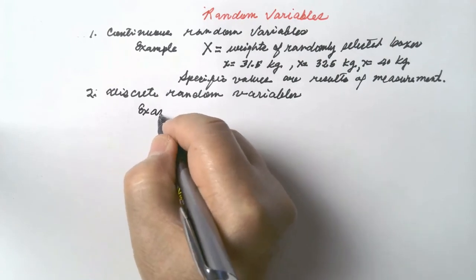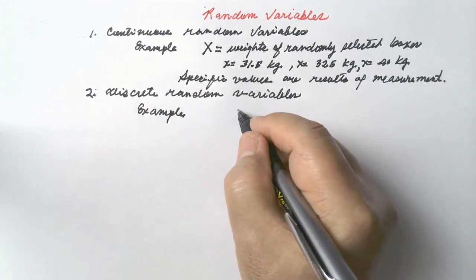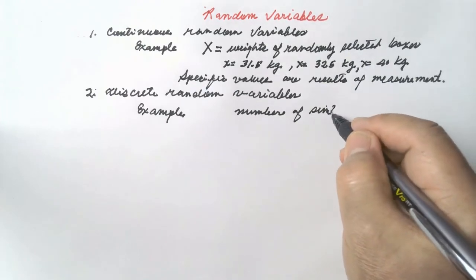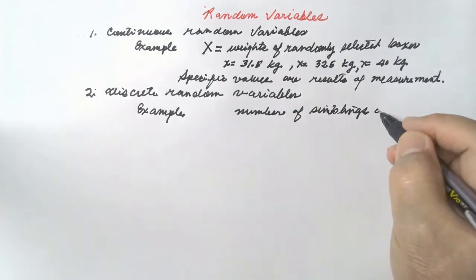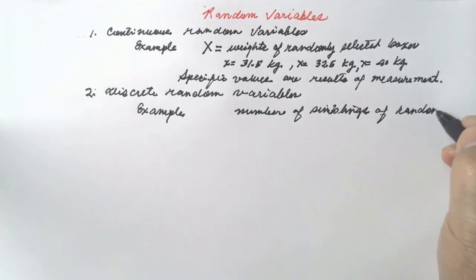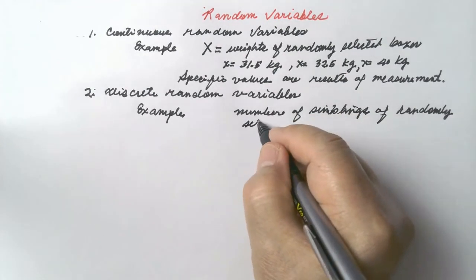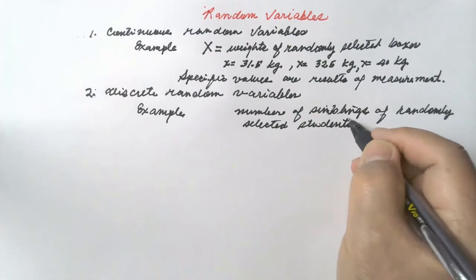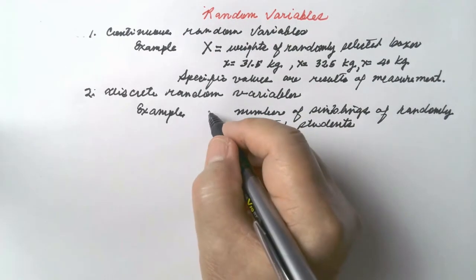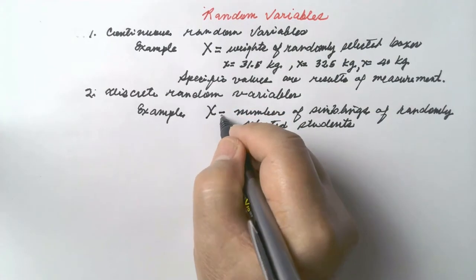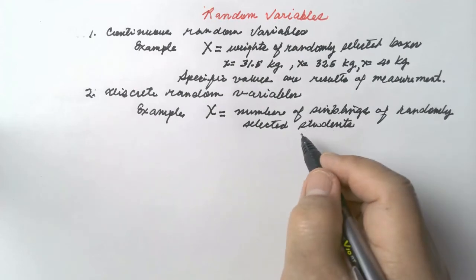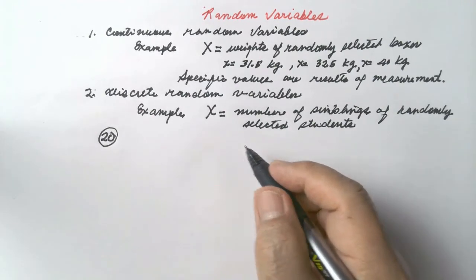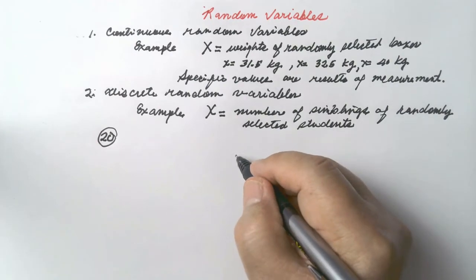For discrete random variables, an example is the number of siblings of randomly selected students. Let us represent this number of siblings by the uppercase letter X. Let us say 20 students were randomly selected.